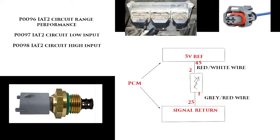The next one we're going to go into is P0097. What you can do is clear the code. If P0097 comes back, disconnect the connector from the temperature sensor, clear codes, and run tests again. You may want to start the vehicle and let it run for a little bit, shut it off, turn the key back on, and then check for codes. If you get a P0098 after disconnecting that connector and rechecking for codes, then you most likely just have an intake air temp sensor that's gone bad.